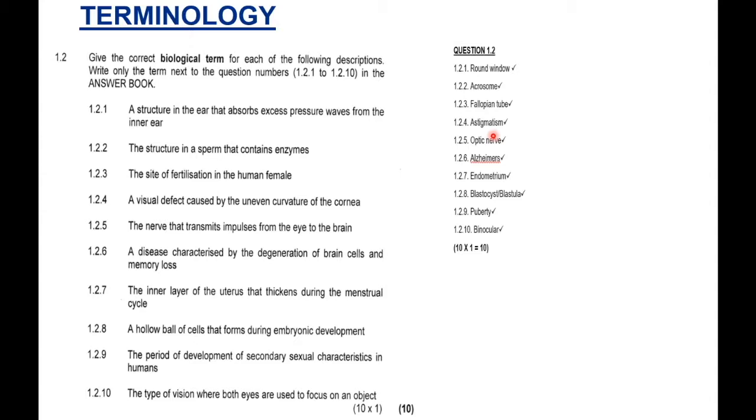Please, junior tuckies, learn how to spell. That's very important. If you spell, it doesn't help you now that you know the word, but you cannot spell it because you're going to get marks for writing the word down. So, please, can I plead with you to learn to spell while you are studying the words. 1.2.5: The nerve that transmits impulses from the eye to the brain. That's very easy. From the eye to the brain, we know it's the optic nerve.